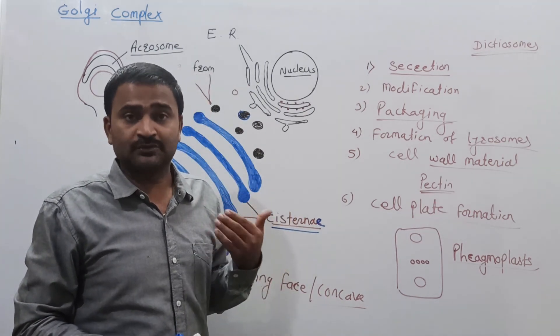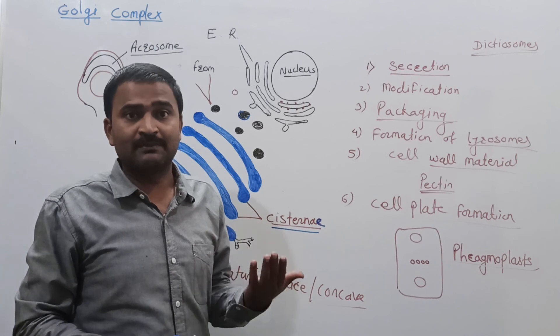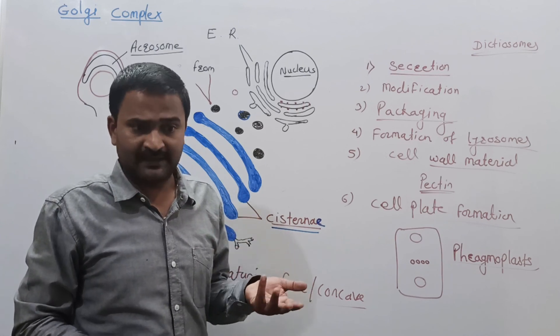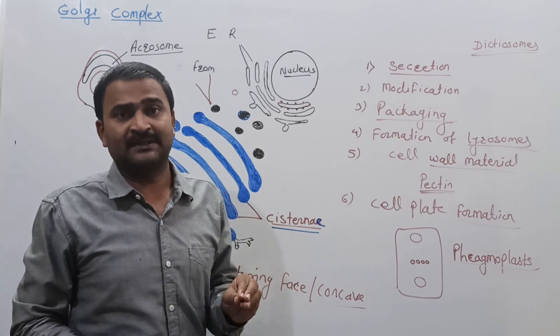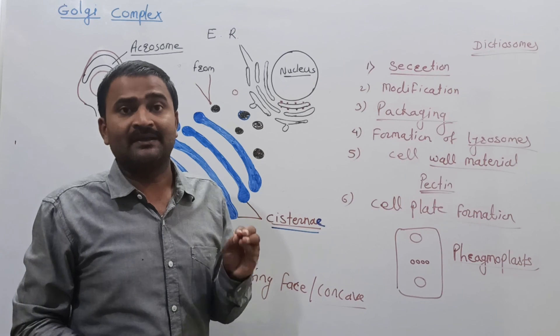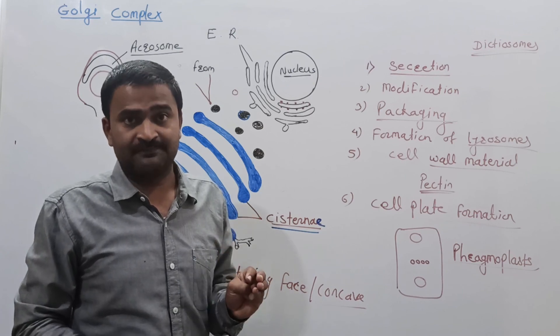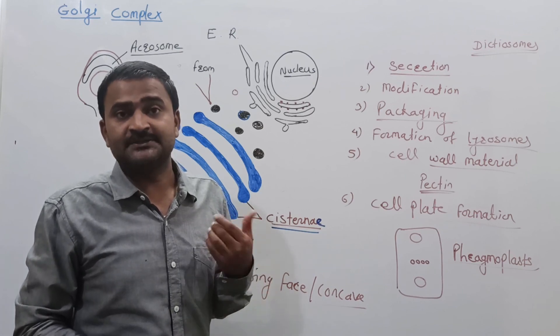This concludes our discussion of the Golgi complex, the second component of the endomembrane system. In the next lecture, we will discuss lysosomes — their structure, the types of cells they are found in, and their functions.